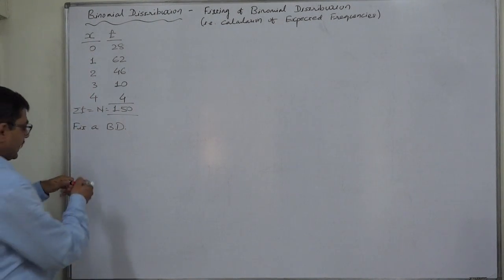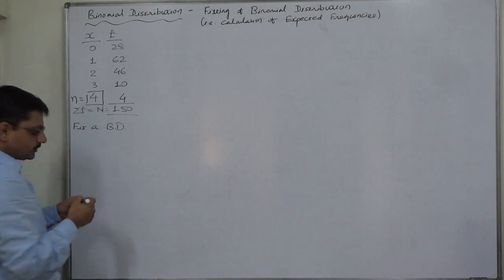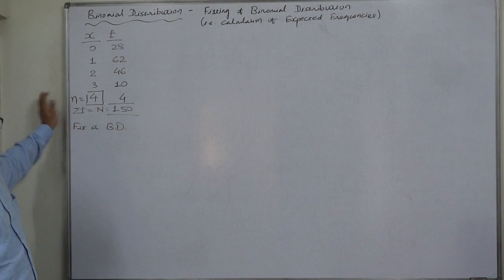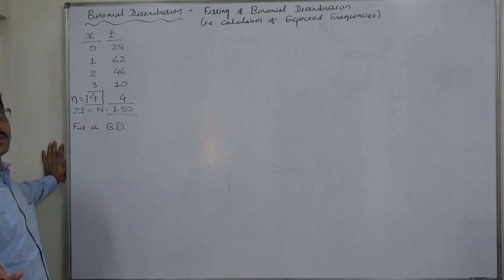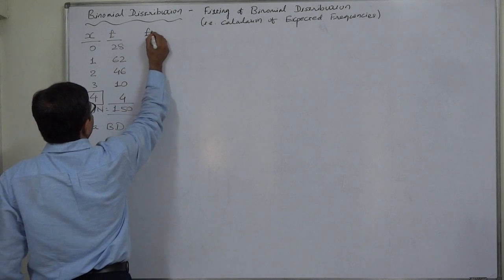N is the highest possible value, so this is nothing but a small n in case of binomial distribution. Through n and np we can find p and q, and so on. So let us start to calculate mean.